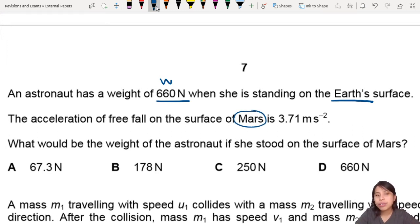On Earth, we have an acceleration of G, which is 9.81 meters per second squared. But on Mars, they are Gm, 3.71 meters per second squared, so that's much lesser. But they ask you, what is the weight of the astronaut if she stood on the surface of Mars?